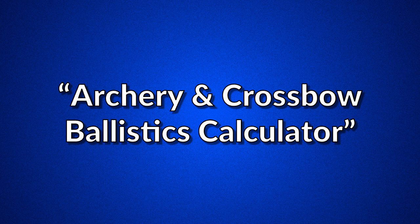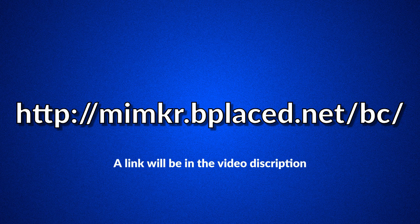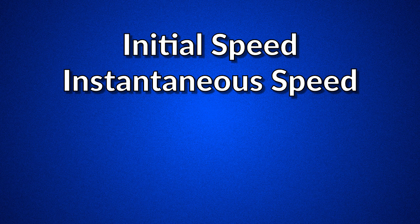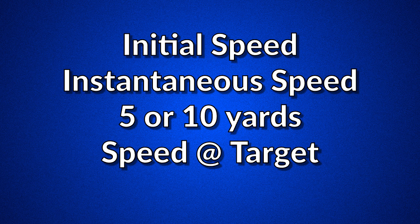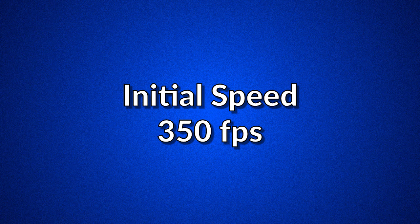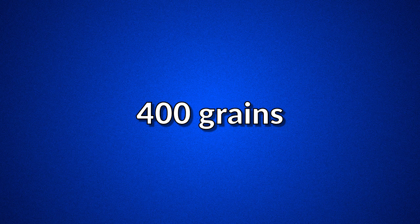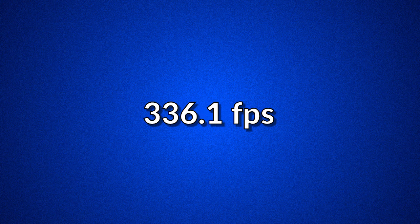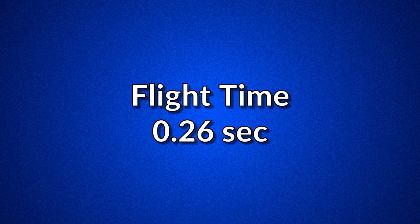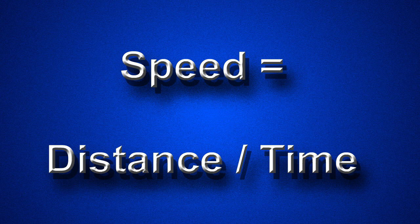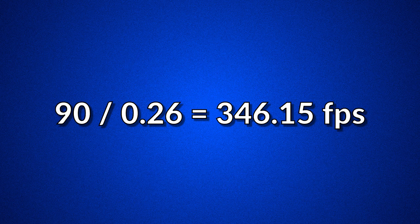One I like to use is the arrow and ballistics calculator found at the website listed here. This calculator provides, among other information, initial speed, instantaneous speed at set distances of 5 or 10 yards — your choice — and the speed at the target. Plugging in an initial speed of 350 and an arrow weight of 400 grains, the results at 30 yards show the speed at the target is 336.1 feet per second and the flight time is 0.26 seconds. With those results you can calculate the average speed: 90 feet (30 yards) divided by 0.26 seconds equals an average speed of 346.15 feet per second. This information will be used later in the video.